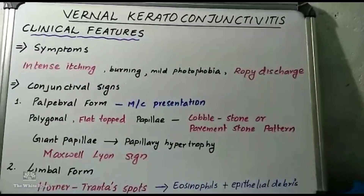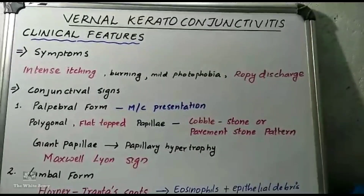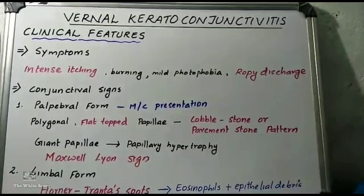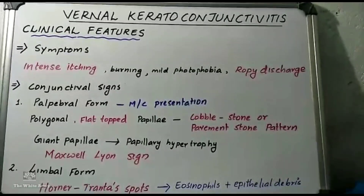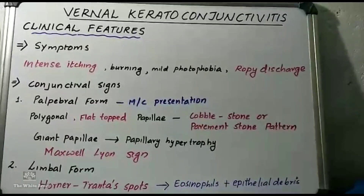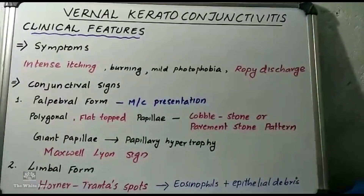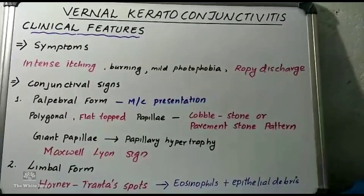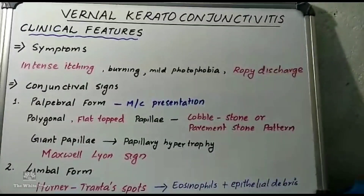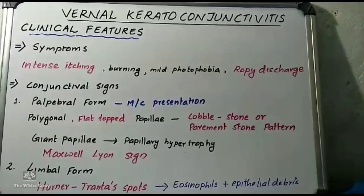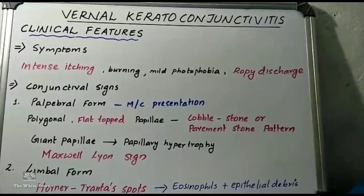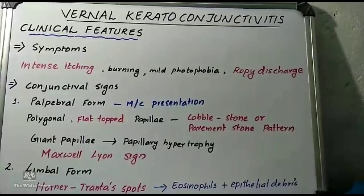We will now see the clinical features of vernal keratoconjunctivitis. The most common symptom is intense itching, which is intolerable and increases when the patient comes in contact with a warm humid atmosphere. Other symptoms include burning sensation, mild photophobia, and characteristic ropey discharge. The signs can be classified as conjunctival signs and corneal signs.